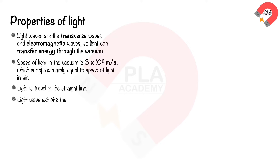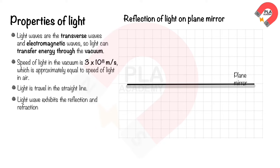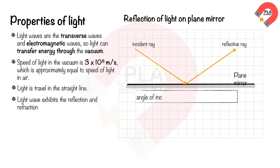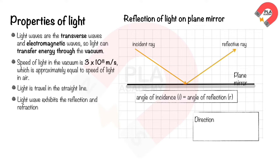Light exhibits reflection and refraction. When a ray of light strikes a plane mirror, it is reflected so that the angle of incidence, i, equals the angle of reflection, r. Mirrors are used to change the direction of a ray of light, while its speed, frequency, and wavelength remain constant.